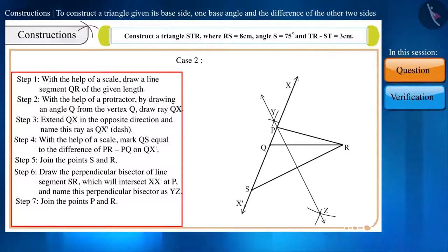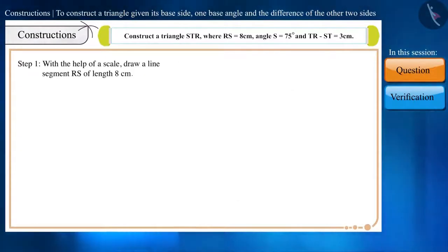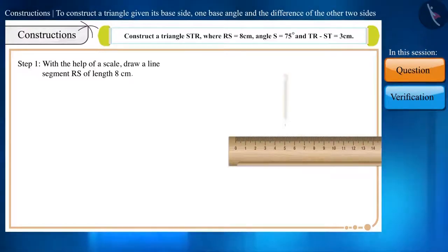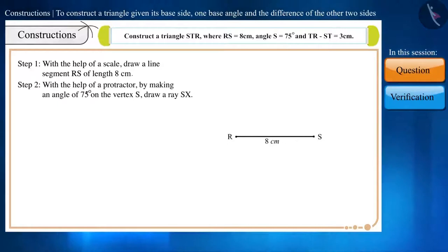Now, we will construct this triangle according to the steps of construction. Step 1. With the help of a scale, draw a line segment RS of length 8 cm.